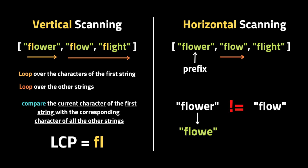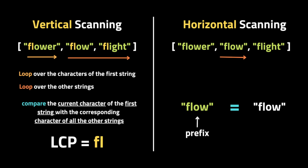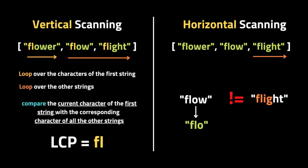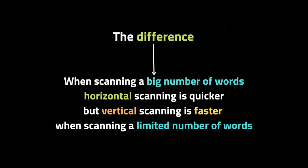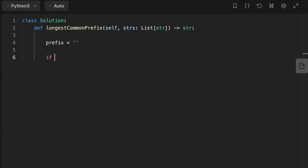The second technique is horizontal scanning. It differs from vertical scanning because we compare whole words, not only individual characters. Given the same input list, we compare the string 'flower' to 'flow'. If they don't match, we remove the last character and repeat the comparison until they match or the prefix is empty — in which case we return an empty string. We then move to the next word and repeat the same process until we find the longest common prefix. The horizontal scanning method is faster when scanning a large number of words, while vertical scanning is faster for a small number of words.